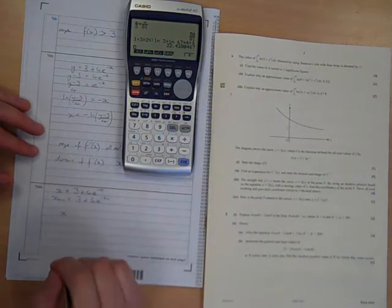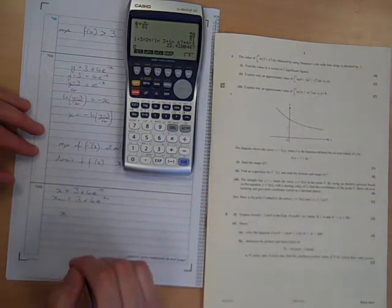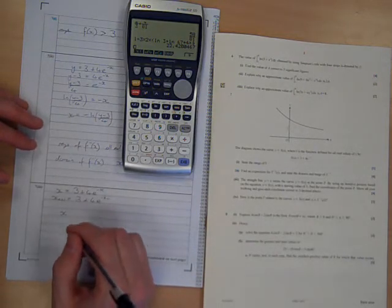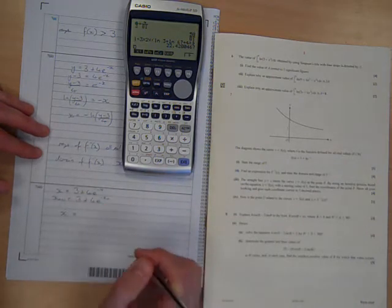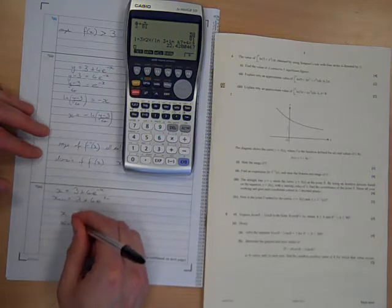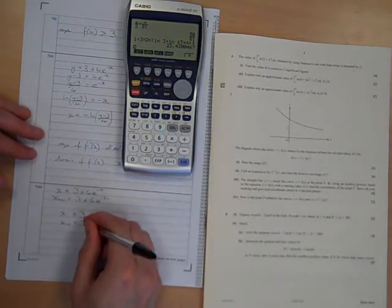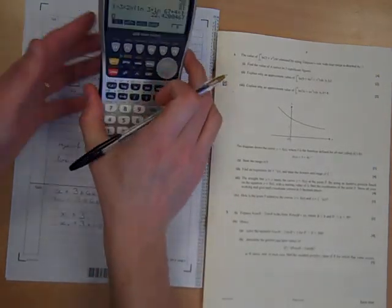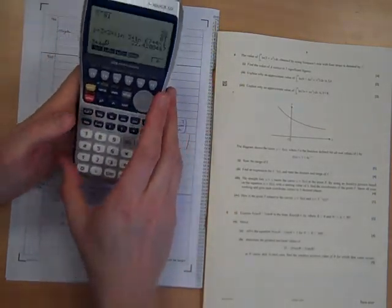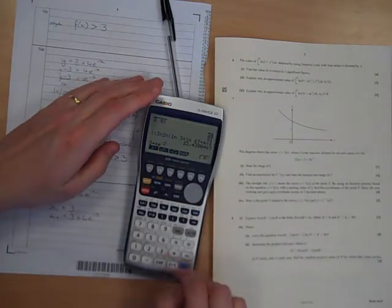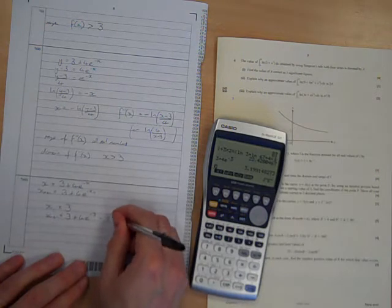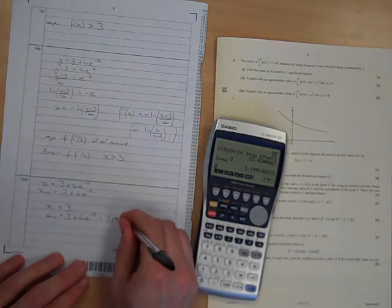We were told that x1, our starting value, x1 over x0 if you want to call it that, is going to be 3. So we need to show each step of this. This is 3 plus 4 e to the minus 3. 3 plus 4 e to the minus 3 is 3.19999948.